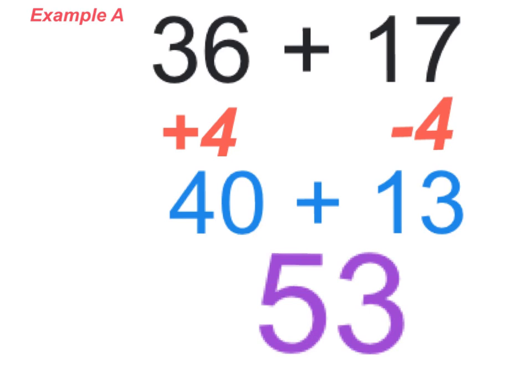So this is the technique which is referred to as compensation. You're basically subtracting from one number that you're adding together to add to the other to make your math simpler to be done.